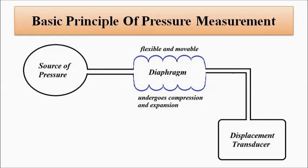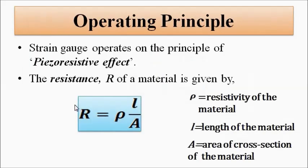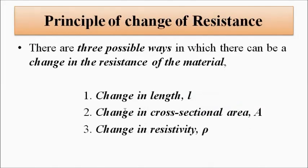The basic operating principle is that the strain gauge operates on the principle of the piezo-resistive effect — change of resistance because of change in the dimensions of the material. We know that resistance is given by R = ρL/A, where ρ is the resistivity, L is the length, and A is the cross-sectional area of the material. There are three ways resistance can change: length, area, or resistivity. Here, change in resistivity has no role to play; length and cross-sectional area are the two parameters that undergo change, causing resistance to change.